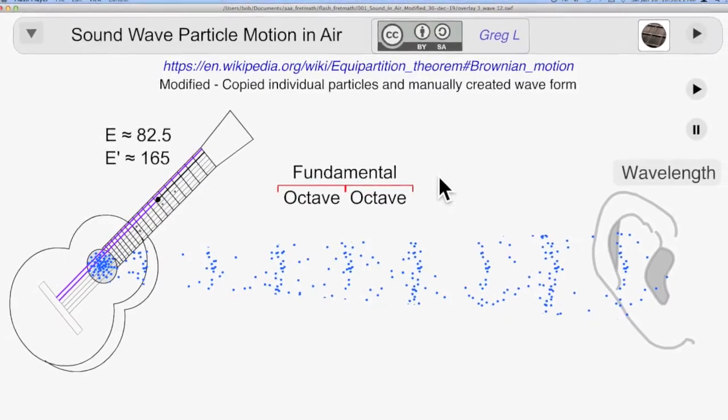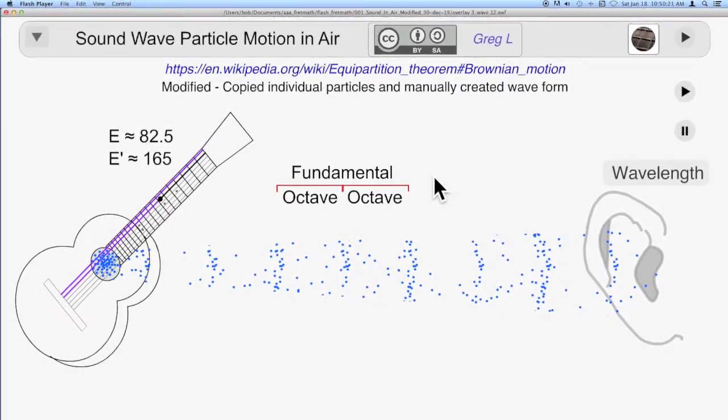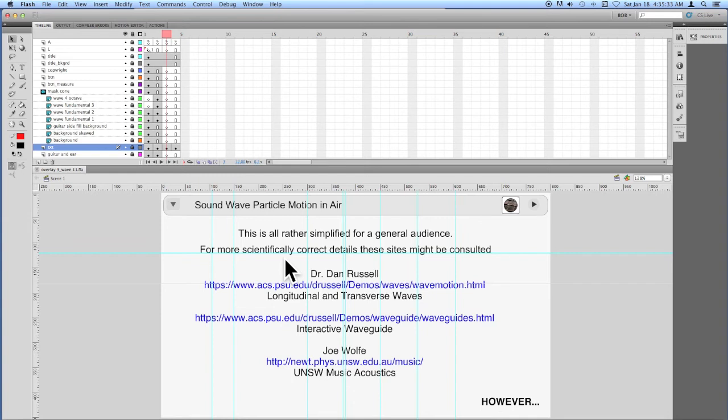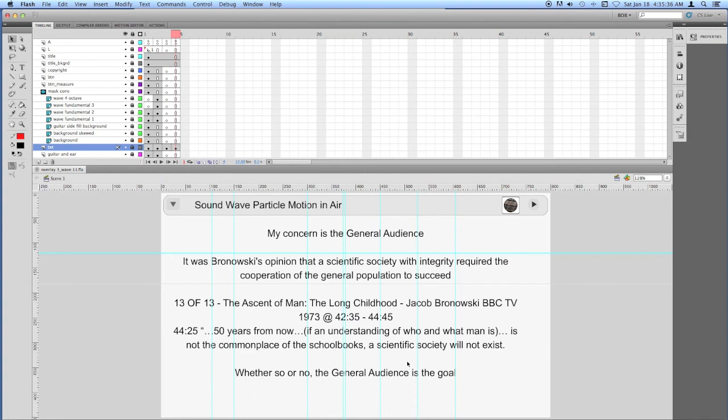So what I ended up using is maybe more of a cartoon than a scientific demonstration. But my concern again is the general audience, and they are not likely to hang around for a course in mathematical physics. I use references to more scientific sites and let them go there if they want. We still got, I guess, two or three years before we find out whether Branowski's prediction here was going to be valid or not. But this is about as far as I can go right now. I'll see what else I can do later.